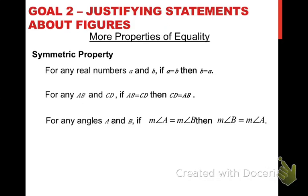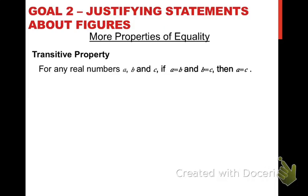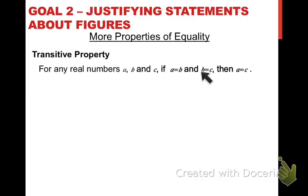So that's the reflexive and symmetric properties. One more to look at, and that's called the transitive property of equality. For real numbers, if you have any numbers A, B, and C such that A and B are equal and B and C are equal, then it's guaranteed that A is equal to C. This one might take a little more explanation, but basically we're saying that A and C are both equal to B, and so they have to be equal to one another.